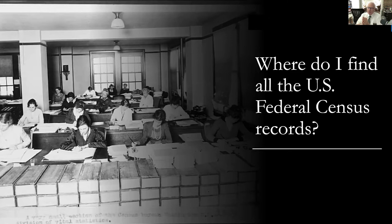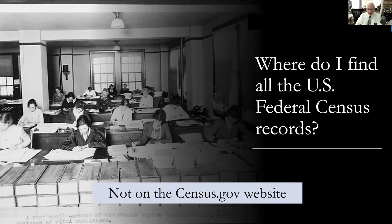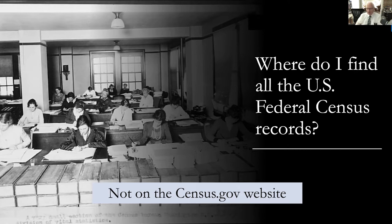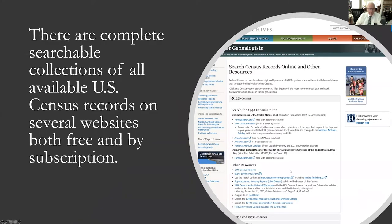Census records are variously categorized not as primary source records but as secondary source records, because they came from people talking about information they did not have official original documents to support. The census record in a sense becomes a primary source because enumerators did go out and talk to people and were there physically, but we always need to remember that not all information from the census will be completely accurate. Also, the information on the census schedules is not on the census.gov website — the Census Bureau's job is merely to do the count, not store those records.